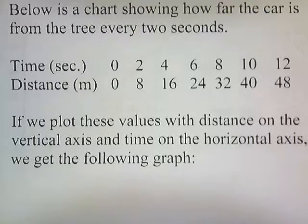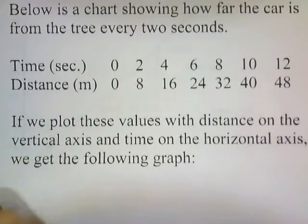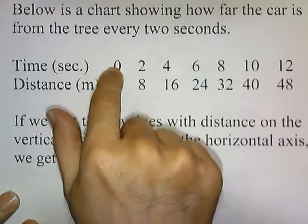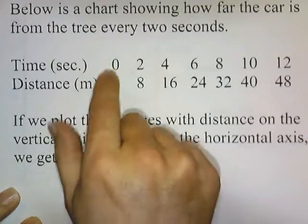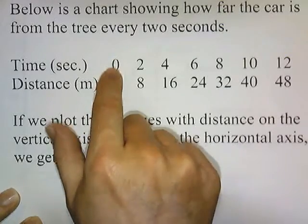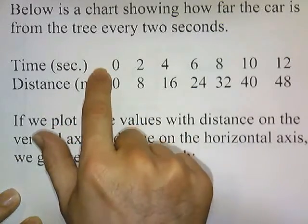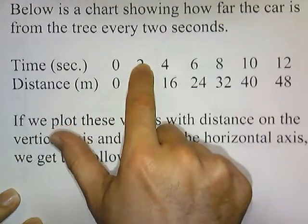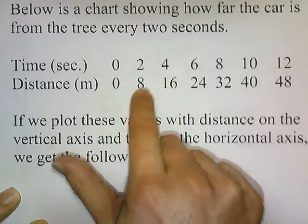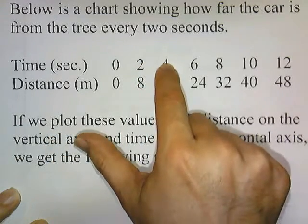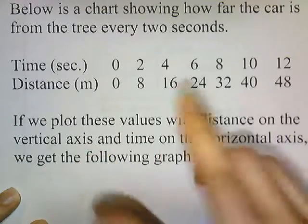So the car is moving, and the moment it passes the tree, we hit a stopwatch. Zero is when we hit the stopwatch. So when it's right at the tree, the distance from the tree is zero. Two seconds later, the car is eight meters from the tree. Four seconds later, the car is 16 meters from the tree, and so on.